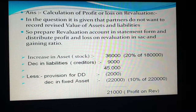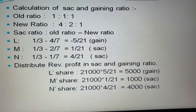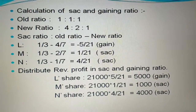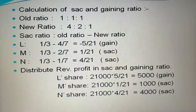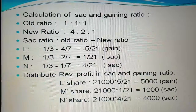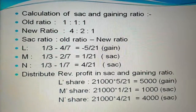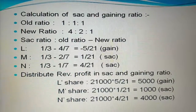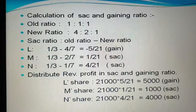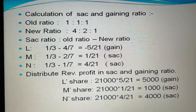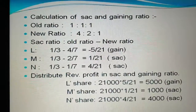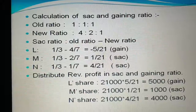Before passing any journal entry, you have to calculate sacrifice and gaining ratio. Old ratio is 1:1:1, and new ratio is 4:2:1. Applying the formula — sacrifice ratio equals old minus new ratio; if positive it is sacrifice, if negative it is gaining. Old ratio is 1/3, 1/3, 1/3 and new ratio is 4/7, 2/7, 1/7. The net effect is that L is gaining by 5/21, while M is sacrificing 1/21 and N is sacrificing 4/21.